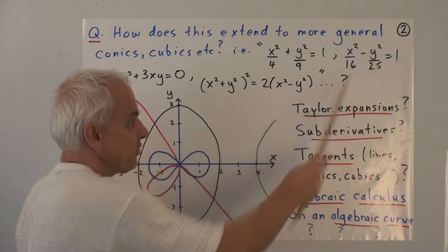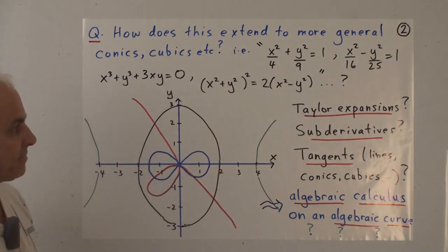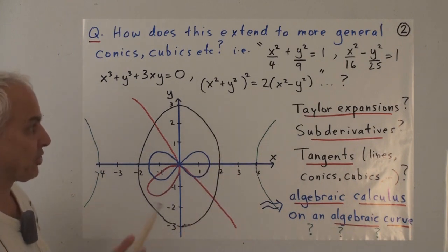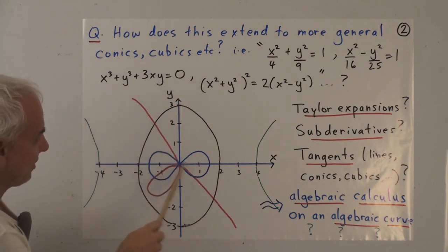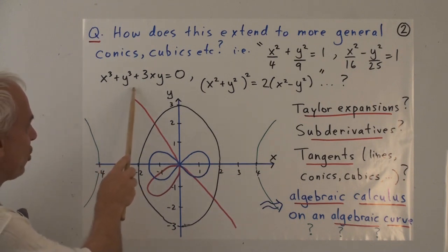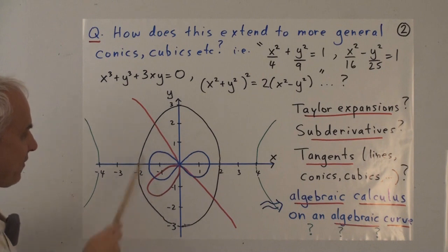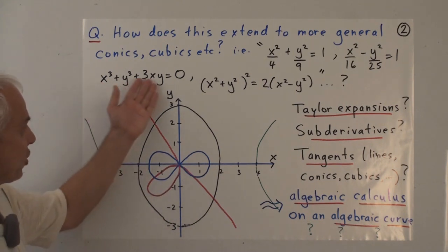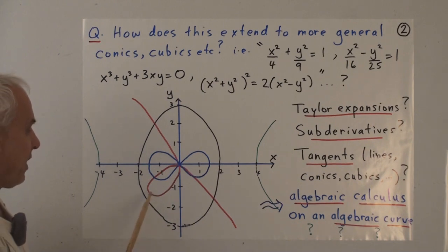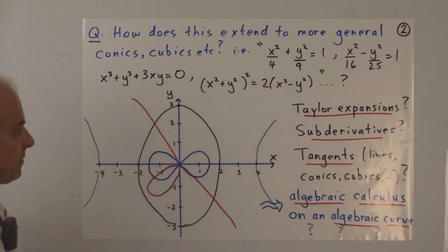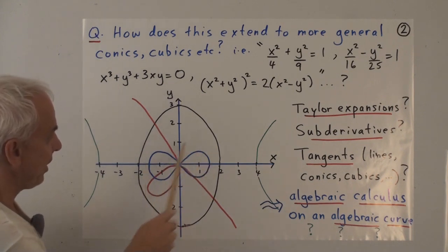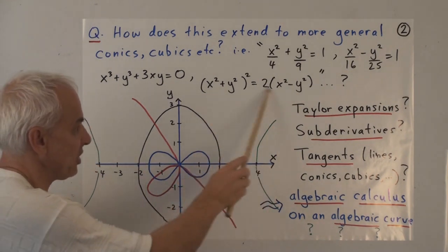I've also shown you a curve which is a little bit more complicated, this one here in red. That has equation x cubed plus y cubed plus 3xy equals 0. It's called the folium of Descartes, an example of a cubic curve. And again there we might ask not just how you calculate a tangent, but how do you calculate a tangent conic at a point. And here's another one, given by an equation of degree 4.